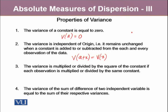Third property talks about that the variance is multiplied or divided by the square of the values. If each and every observation in the data is multiplied or divided by some constant, let's say if a is multiplied with each and every observation in the data, the variance of ax turns out to be square of the a times variance of x.